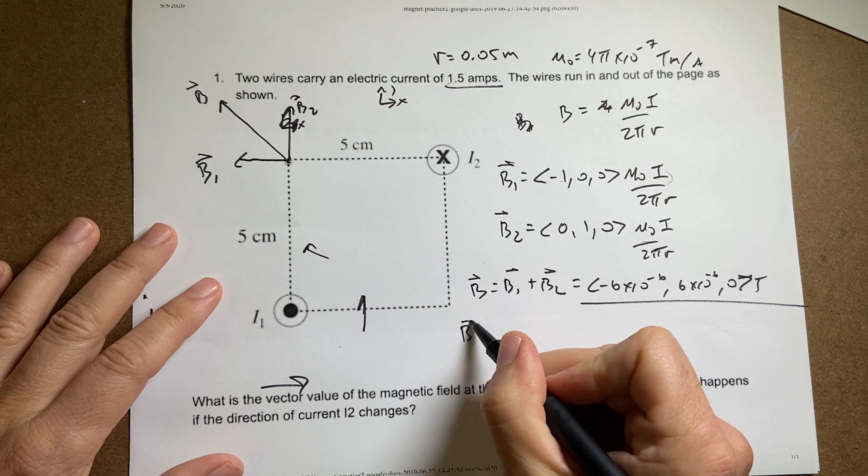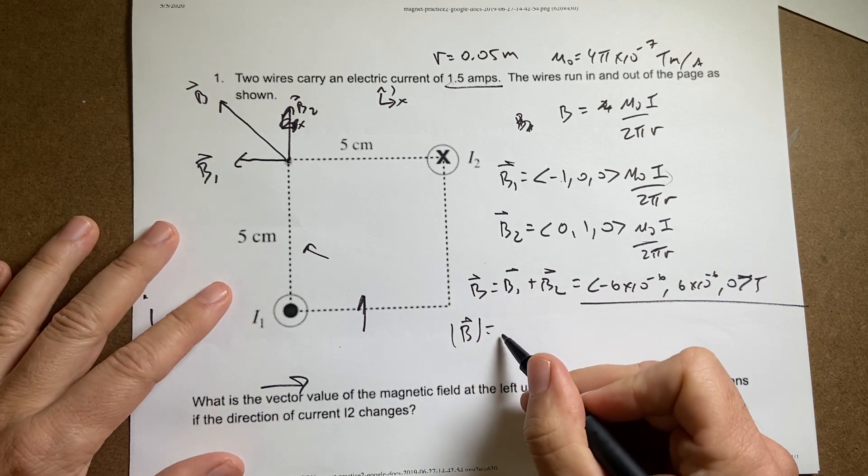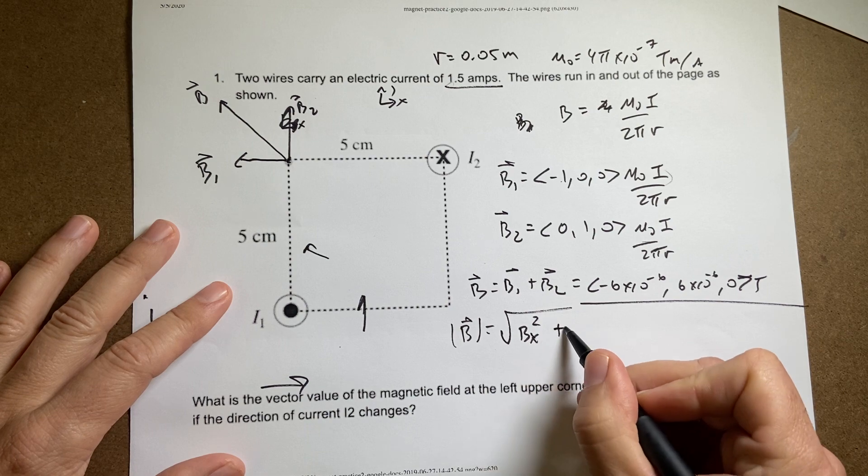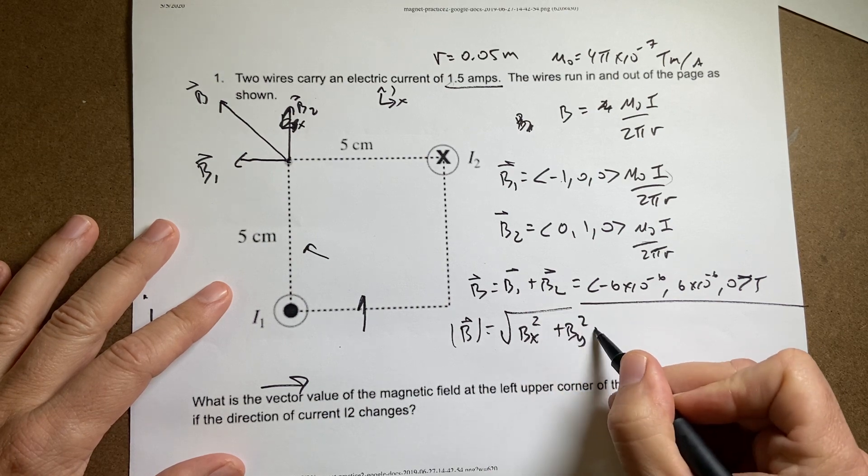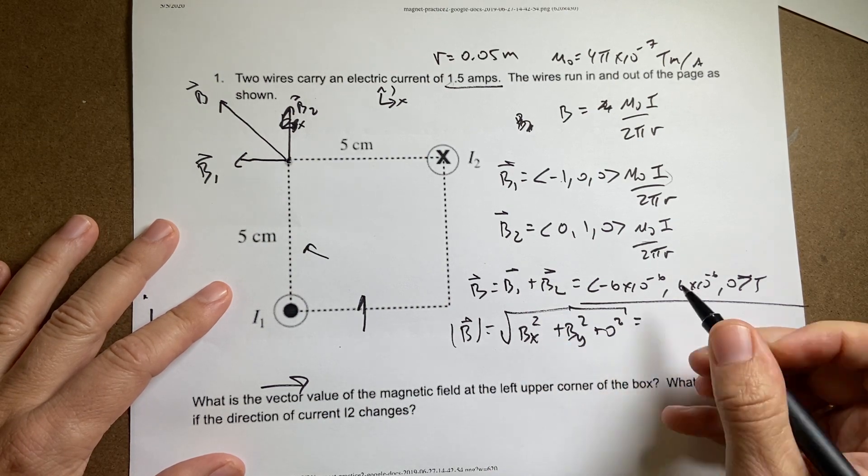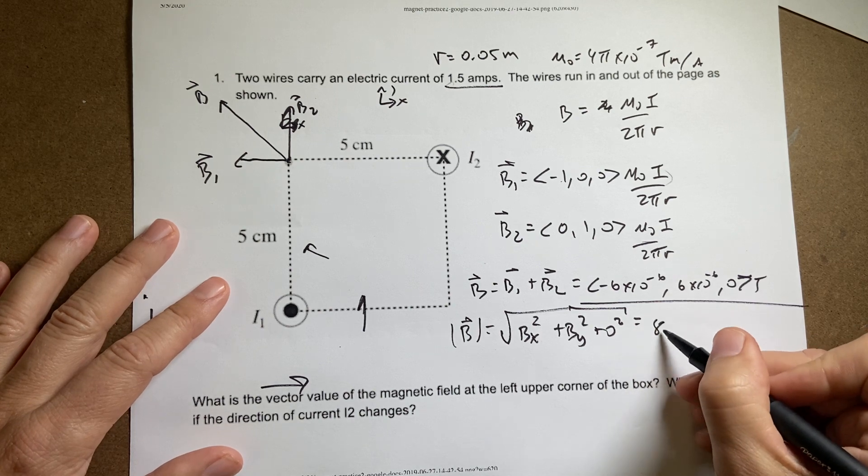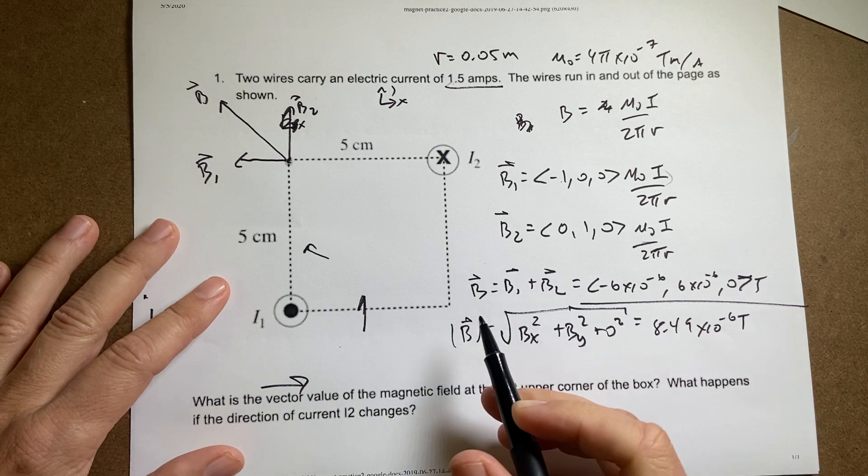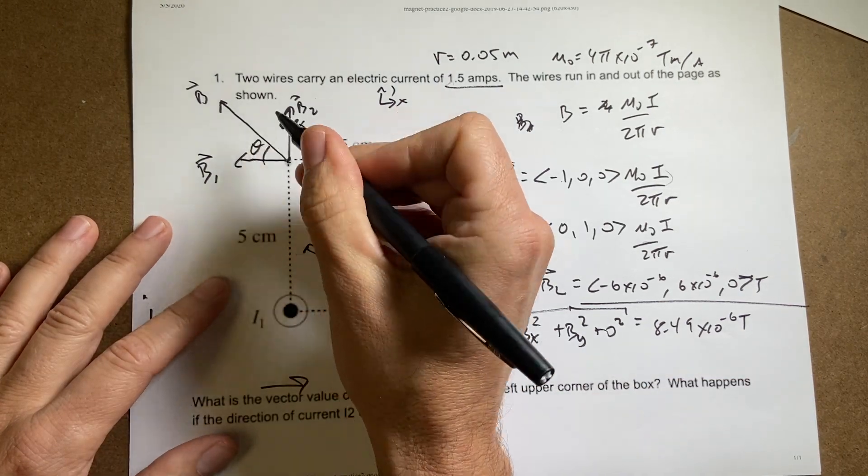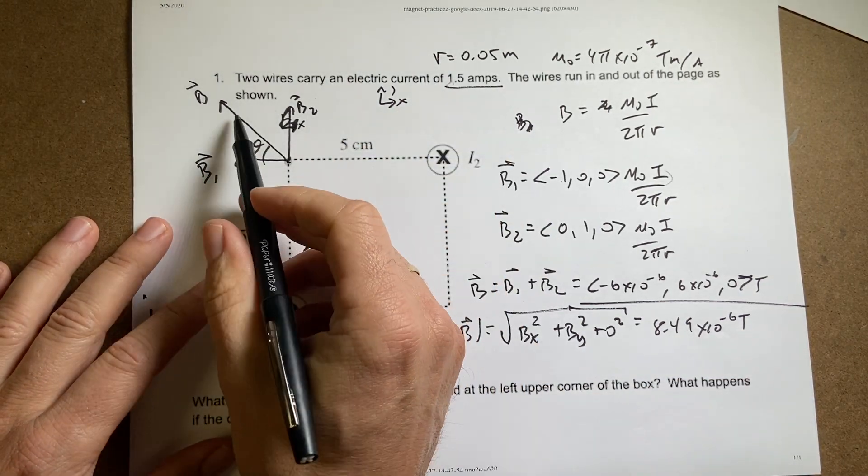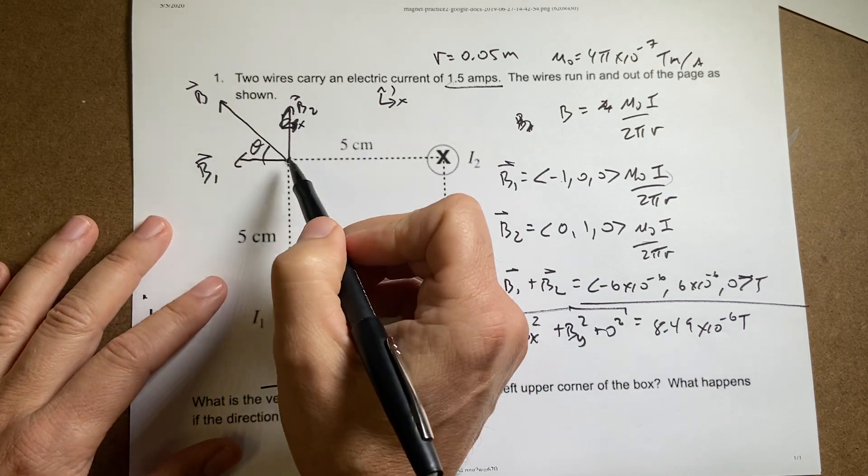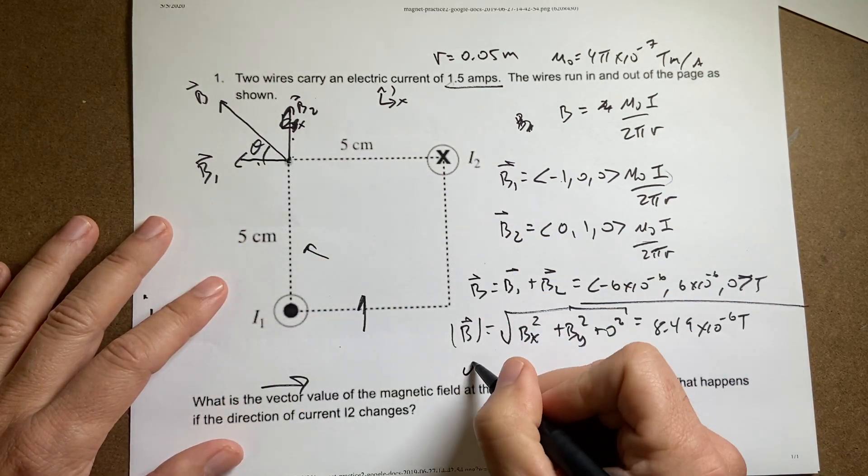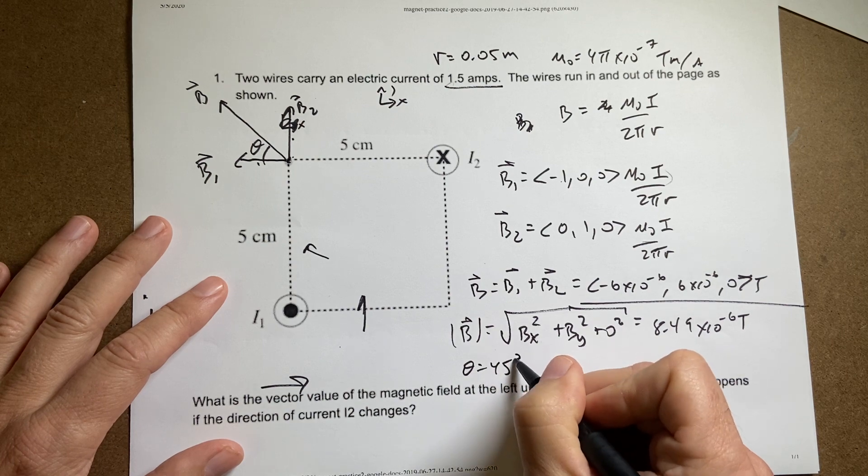Now what if you want the magnitude of that total magnetic field? Well, that would be the square root of Bx squared plus By squared plus 0 squared. If you do that, you get 8.49 times 10 to the negative 6th tesla. If you want to find this angle right here, well, that one's pretty easy. You could do the inverse tangent to find that. But since both of these have the same magnitude, that has to be at a 45 degree angle. And there you go.